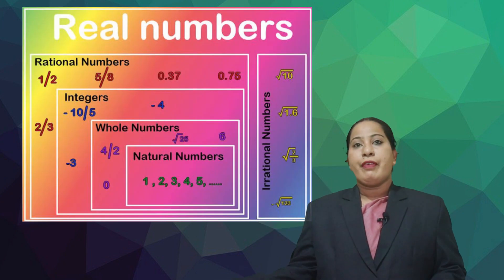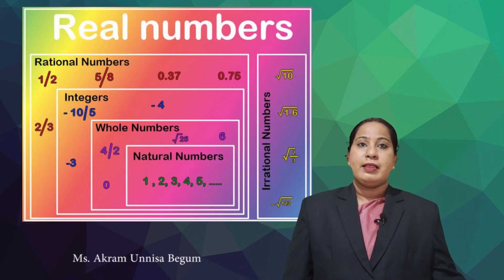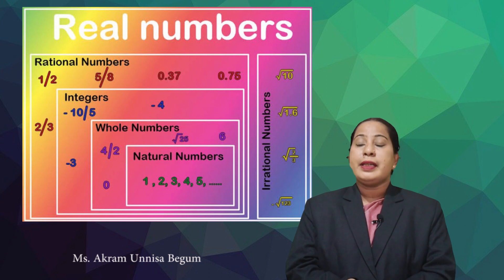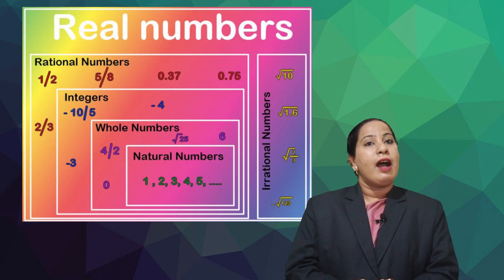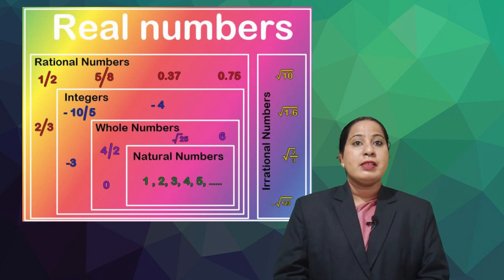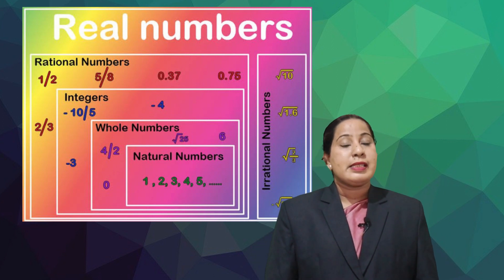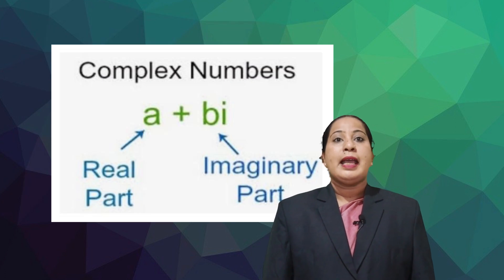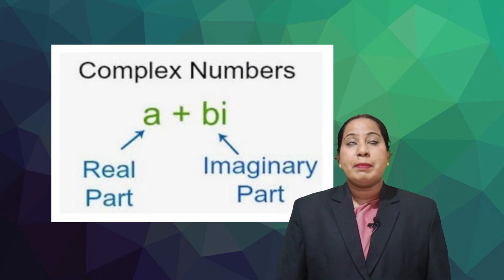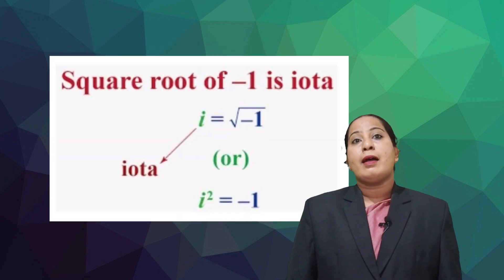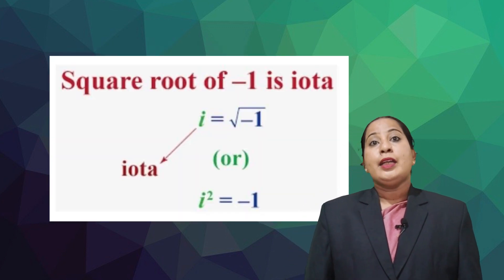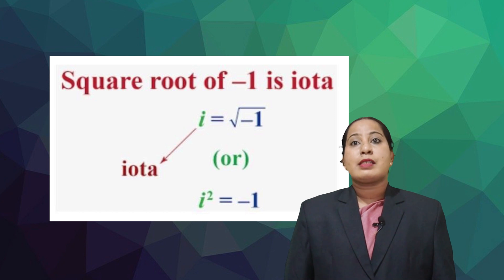Collection of rational and irrational numbers together form real numbers. And it is represented with the letter R. Imaginary numbers are known as complex numbers. It is represented as A plus IB where A and B are real numbers. And I square is minus one.